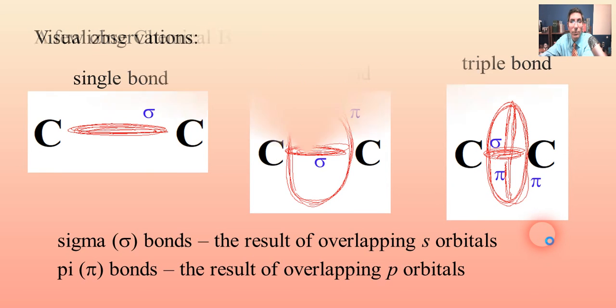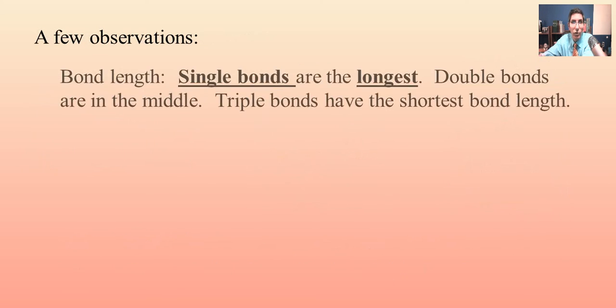So in review, just a few observations about this. The bond length: single bonds are the longest. Triple bonds are the shortest and they're also the strongest of the three. Double bonds are kind of in the middle. They have an intermediate bond length and an intermediate bond strength as well.